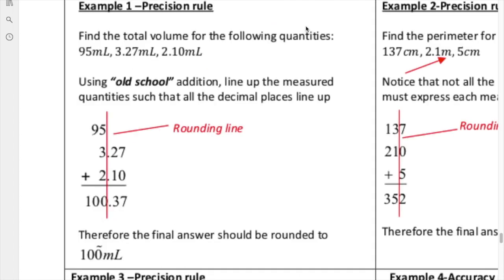Okay, so let's take a look at our first example. And again, we're looking at the precision rule here. In our first example, we're going to be dealing with three measured quantities. We have 95 milliliters, 3.27 milliliters, and 2.10 milliliters. So step number one is we're going to indicate where the position of the guess is. So in this case, that would be our 5, our 7, and our 0. And the reason why it's 0 here is because, again, that is the weird rule. I already have the rounding line indicated on our question here.